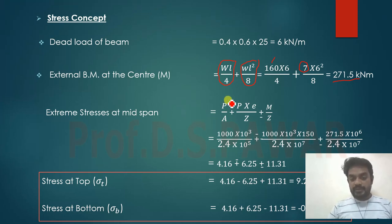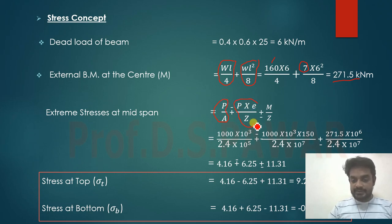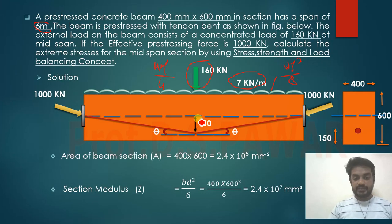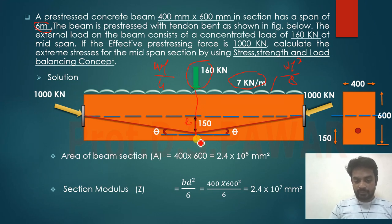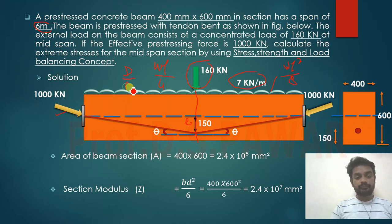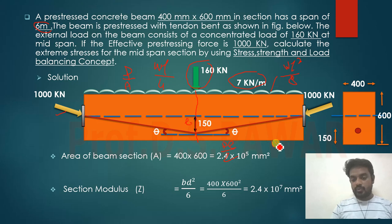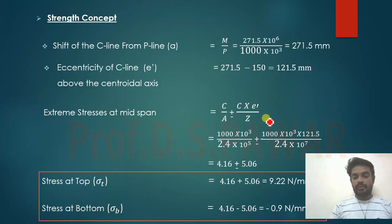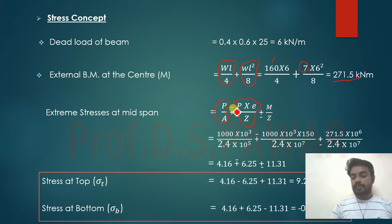To calculate the extreme stresses at mid-span, we use: direct stress P/A due to the prestressing force, stress due to eccentricity Pe/Z where the eccentricity e = 150 mm, and stress due to bending moment M/Z. The combined formula is: P/A ∓ Pe/Z ± M/Z.